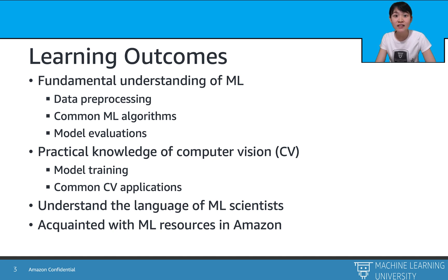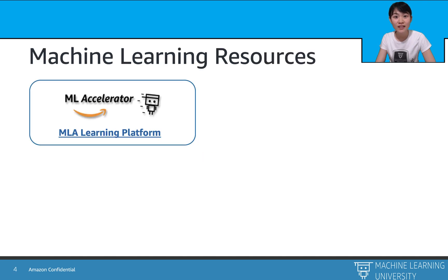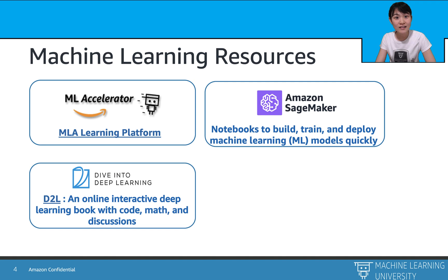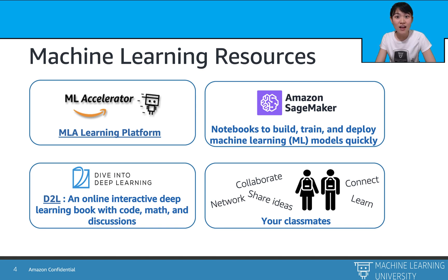As for the machine learning resources, here are some to get you started with. First is the MLA learning platform, where all existing MLA courses, slides, and notebooks are posted. Second is Amazon SageMaker, an integrated platform to build, train, and deploy machine learning models quickly — all of our notebooks will be hosted there. Next is the D2L book, an online interactive deep learning book with code, math, and discussion. Last but not least, your classmates — whether learning online or in person — will also be a resource, so feel free to ask questions on our discussion forum.